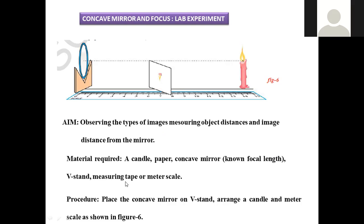The materials required are: a candle, paper to get the image, a concave mirror, a V-shaped stand to hold the concave mirror, and the mirror should have a known focal length. A measuring tape or meter scale is required to measure the distance between the components.